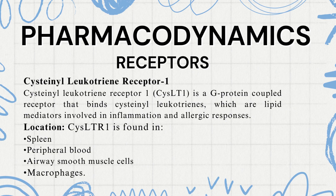Pharmacodynamics — Receptors: Montelukast usually binds to cysteinyl-leukotriene receptor 1 (CysLT1), which is a G-protein coupled receptor. This receptor usually binds leukotrienes, which are lipid mediators involved in inflammation and allergic responses. These receptors are found in the spleen, peripheral blood, airway smooth muscle cells, and macrophages.